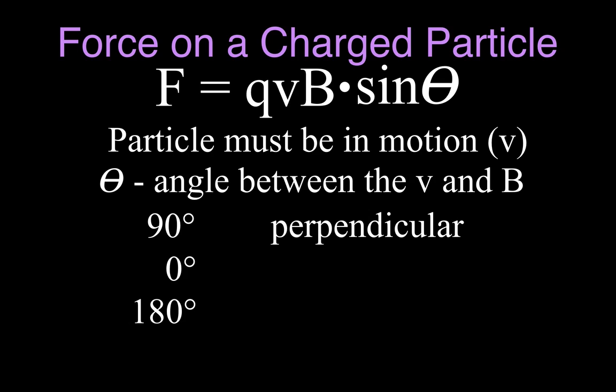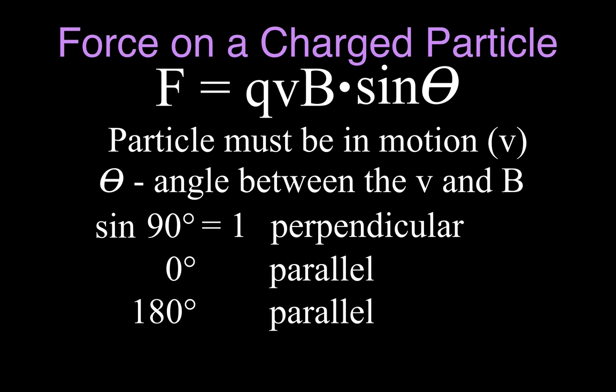If the angle between the velocity of the particle and the magnetic field is perpendicular — it's 90 degrees — then it's moving perpendicular to the magnetic field. If we take the sine of 90, then we get one. In that case, the particle is feeling the maximum or the full strength of the magnetic field. If the angle between the motion of the particle and the magnetic field is either zero or 180, then the particle is moving parallel to the magnetic field.